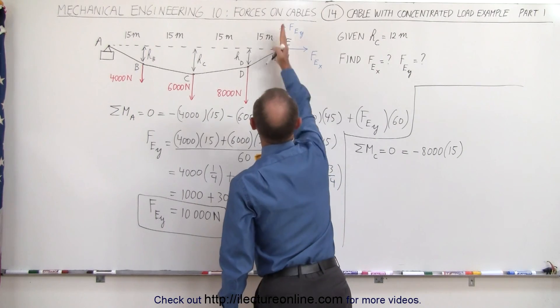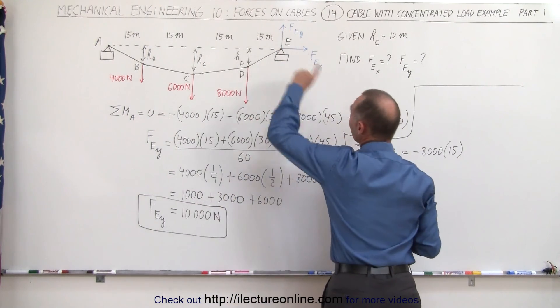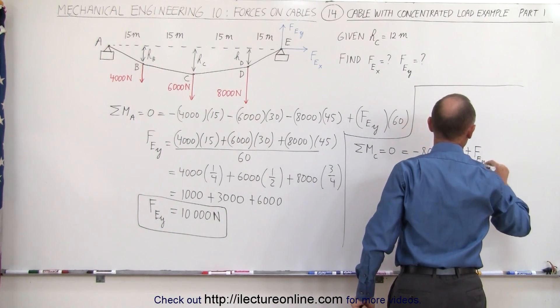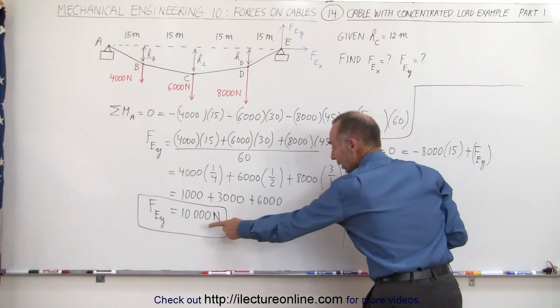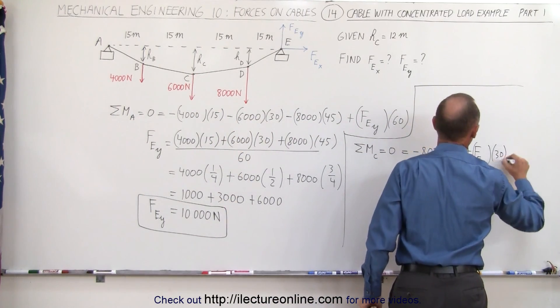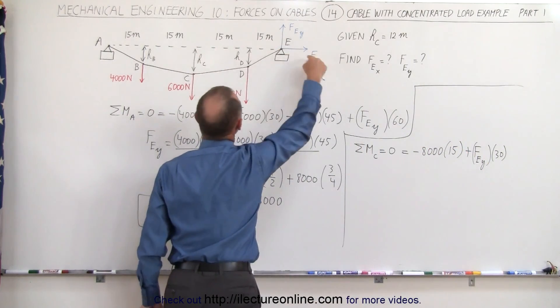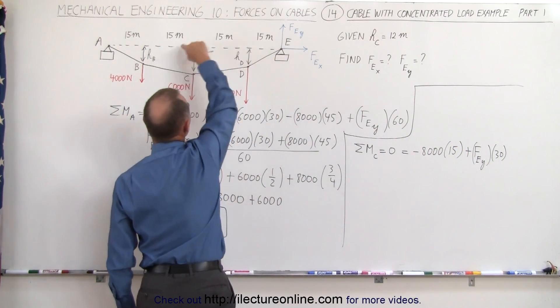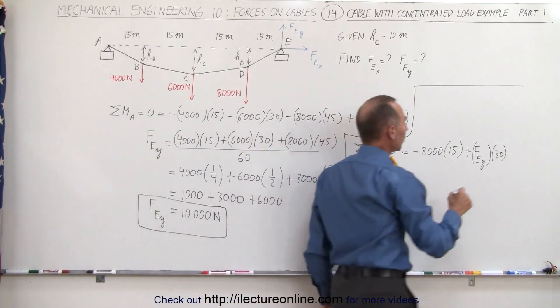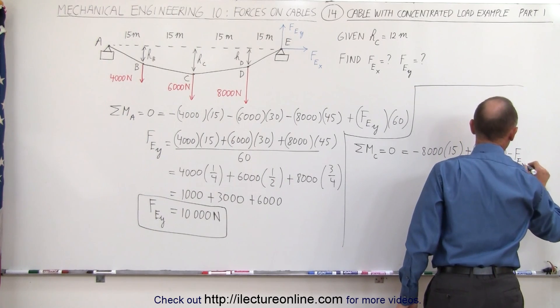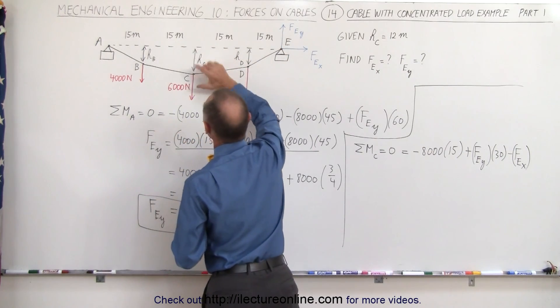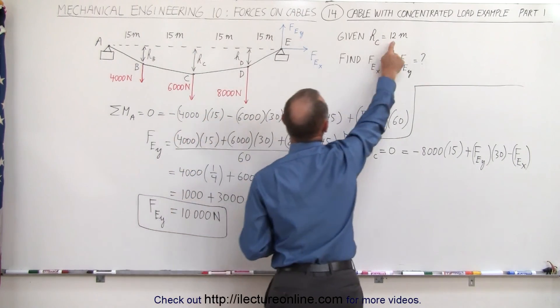We do need F in the y direction. That will give us a counterclockwise one. That would be plus F_E in the y direction. We now know what that is—that's equal to 10,000 newtons. We multiply that times 30 meters. And F_E_x will give us a clockwise torque about point C. That would be minus F_E_x, and we do know the distance. H_sub_C was given to us as 12 meters.